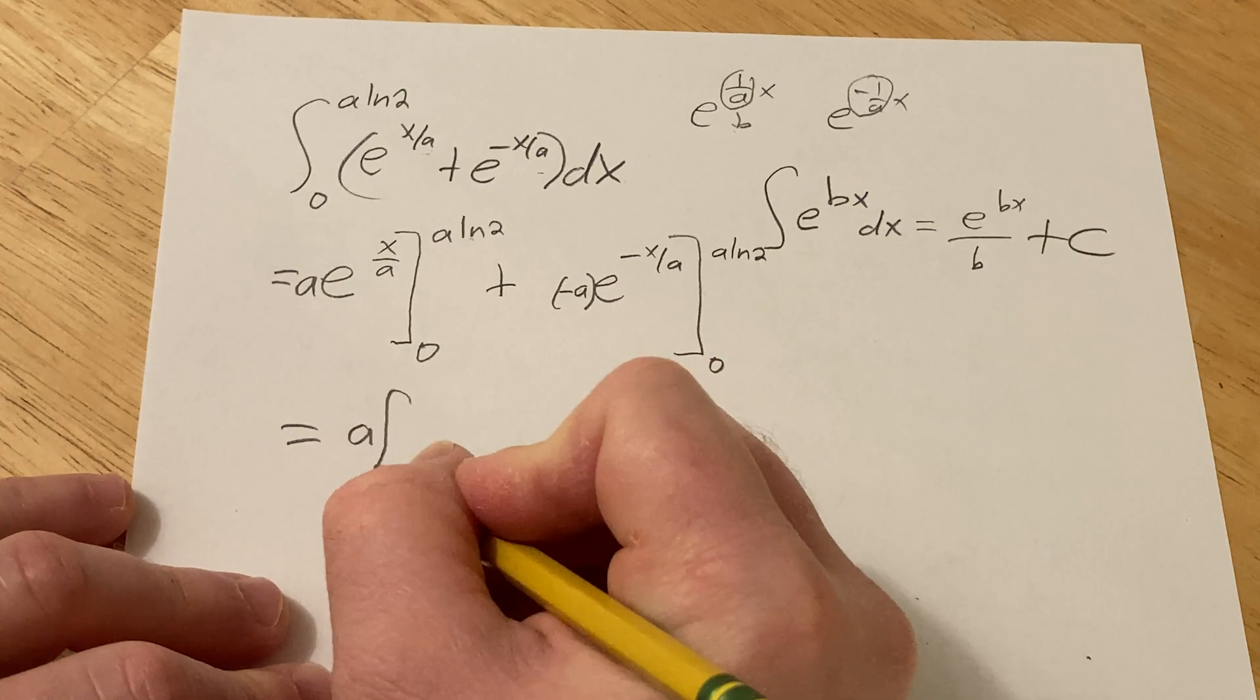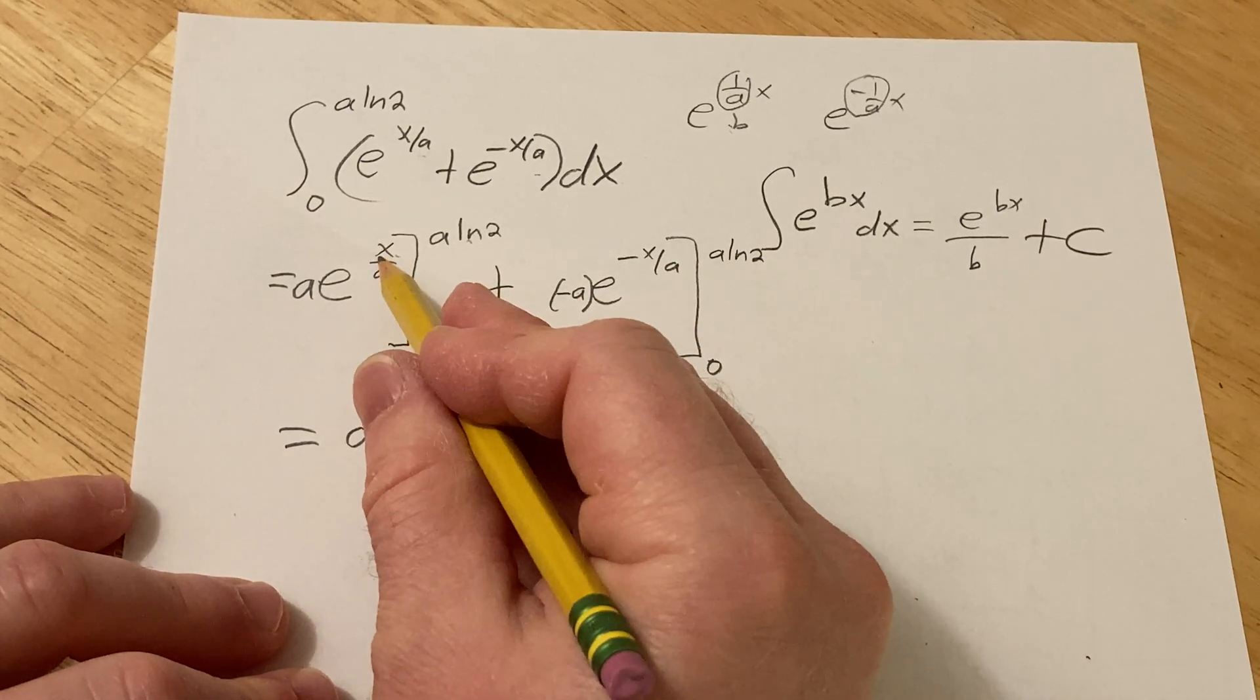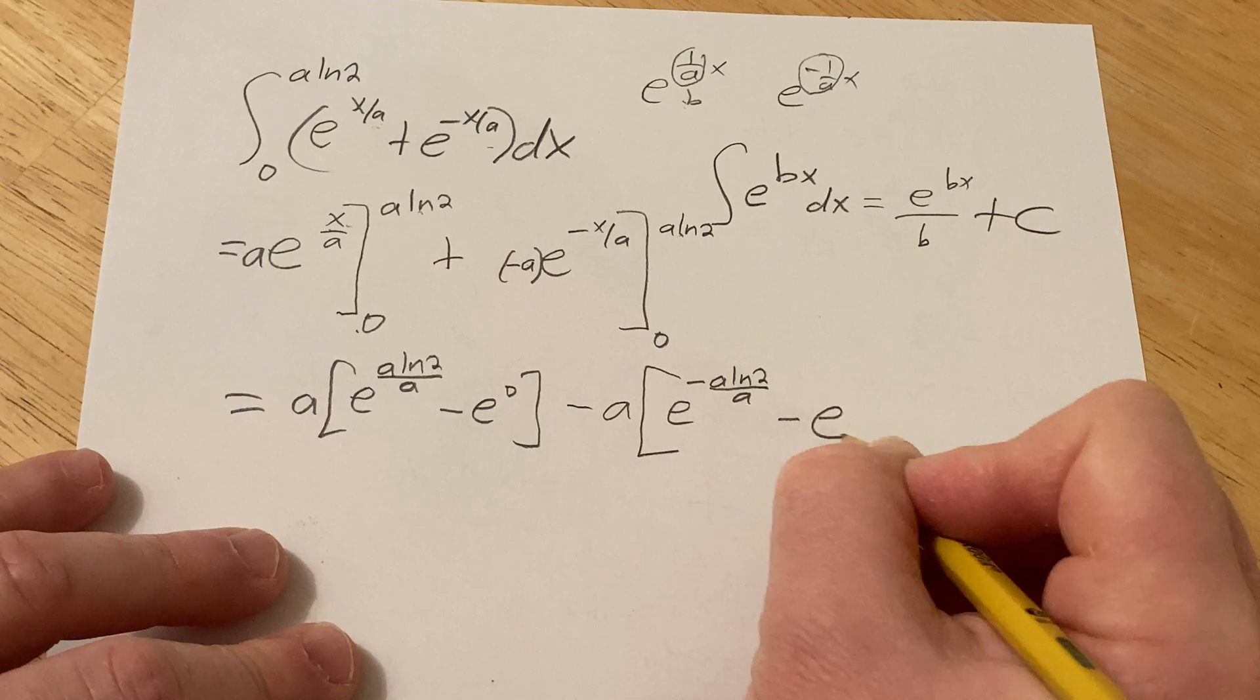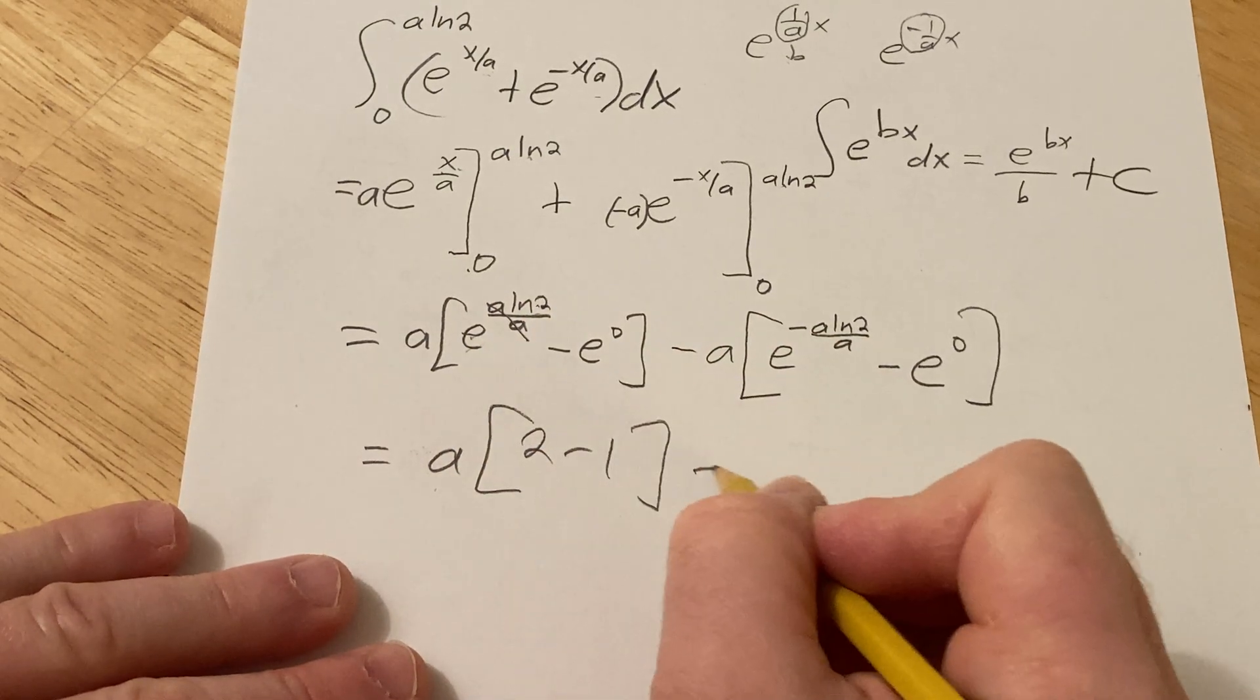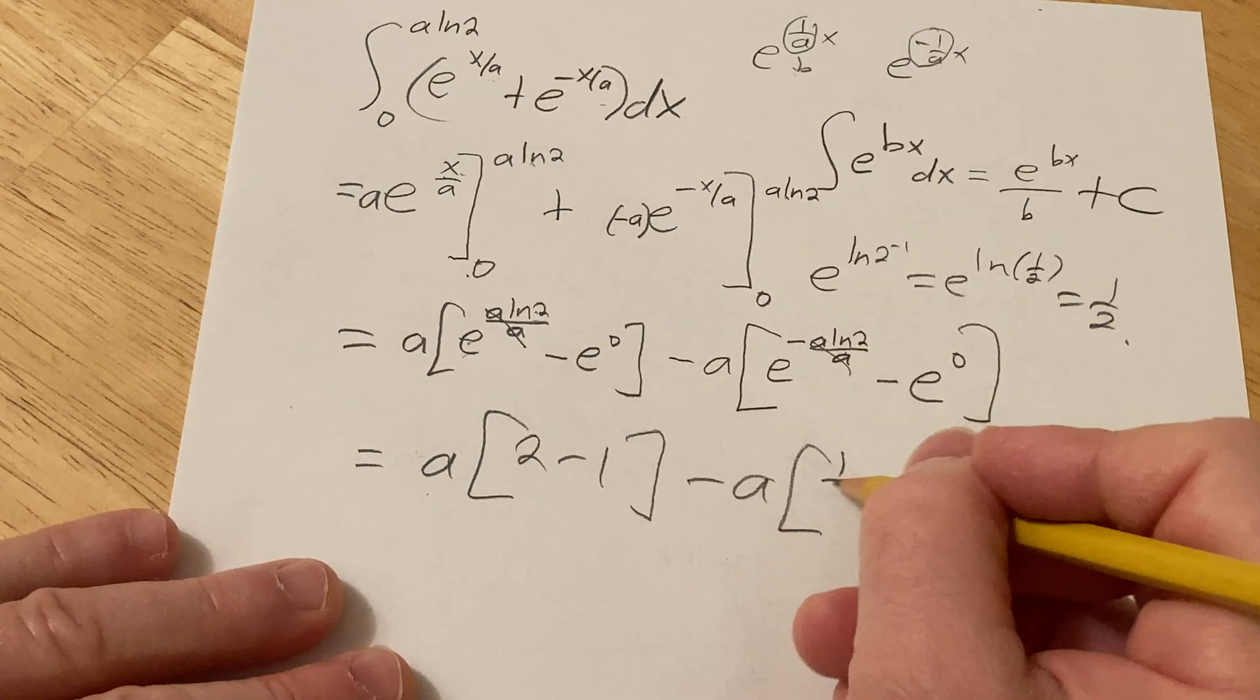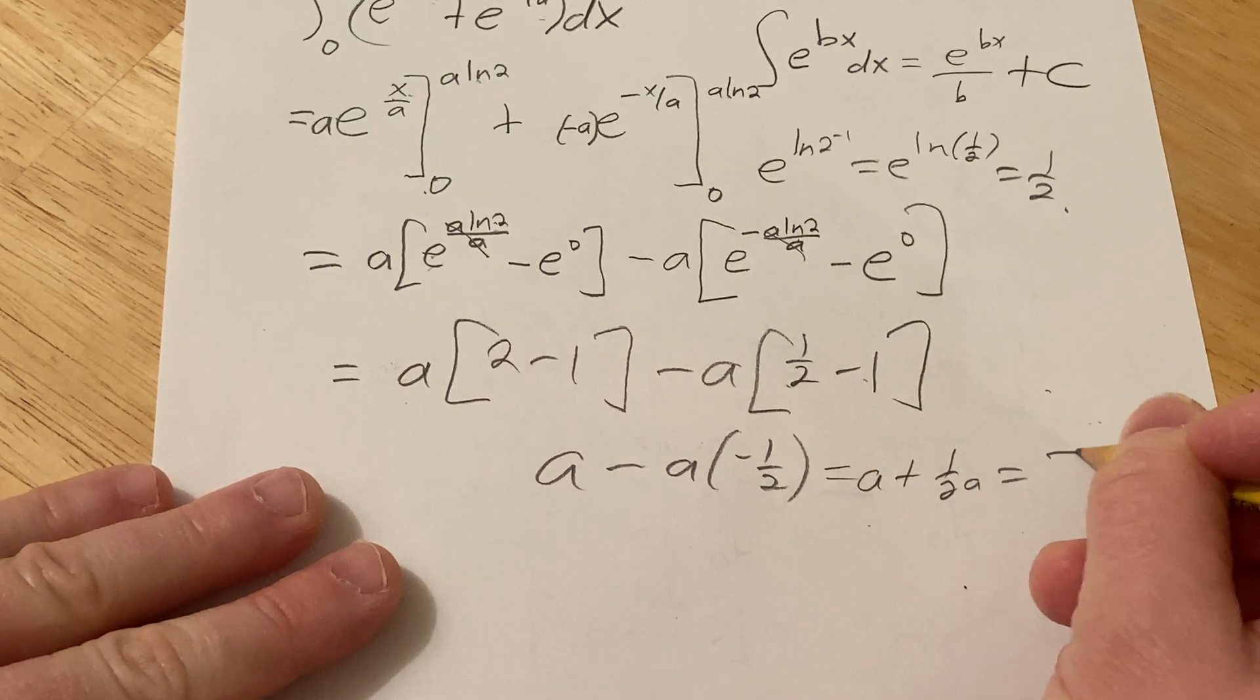We plug in this one first. I'll leave the a outside. Plug it in for x. You get e to a ln2 over a minus e to the 0. Then minus a, plugging in this one now, we get e to the minus a ln2 over a minus e to the 0. This is a. This is going to be 2 again, minus 1. Minus a. This is going to be e to the negative ln2. You bring the negative up and get 1 half. So this will be 1 half minus 1. This will be a minus a. 1 half minus 1 is negative 1 half. So this is a plus 1 half a, so 3 halves a.